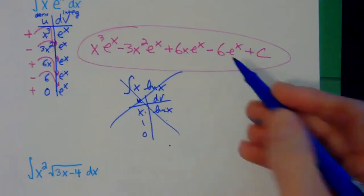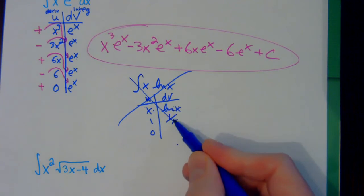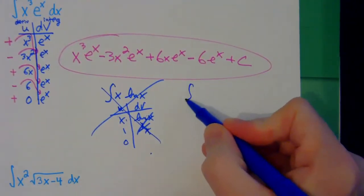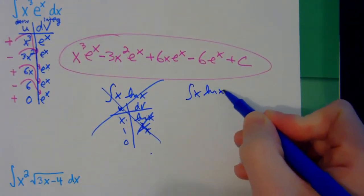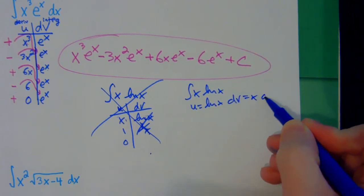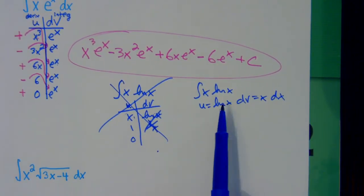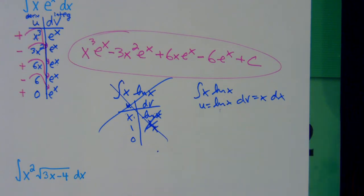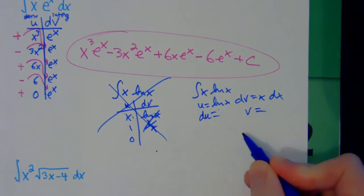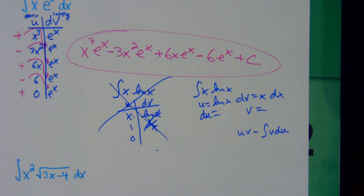It works really well if your u is something you can keep differentiating down to zero. A common mistake is putting a 1 over x as the derivative instead of integrating the right side. On something like x ln of x, you have to let the u be the ln part and the dv be the other part. The derivative of ln x will never go to zero, so you cannot use the shortcut — you have to do it the original way, setting up your du and v and using the uv minus integral v du formula.